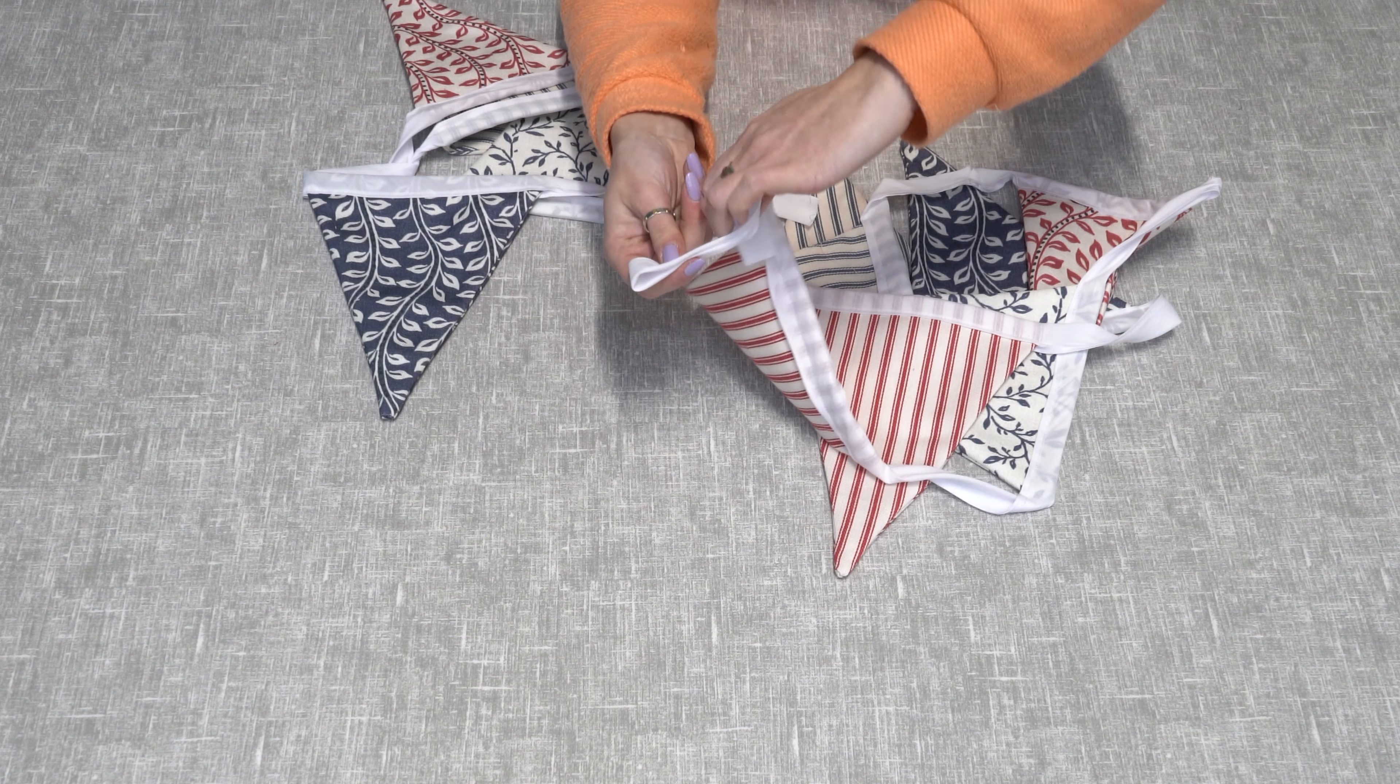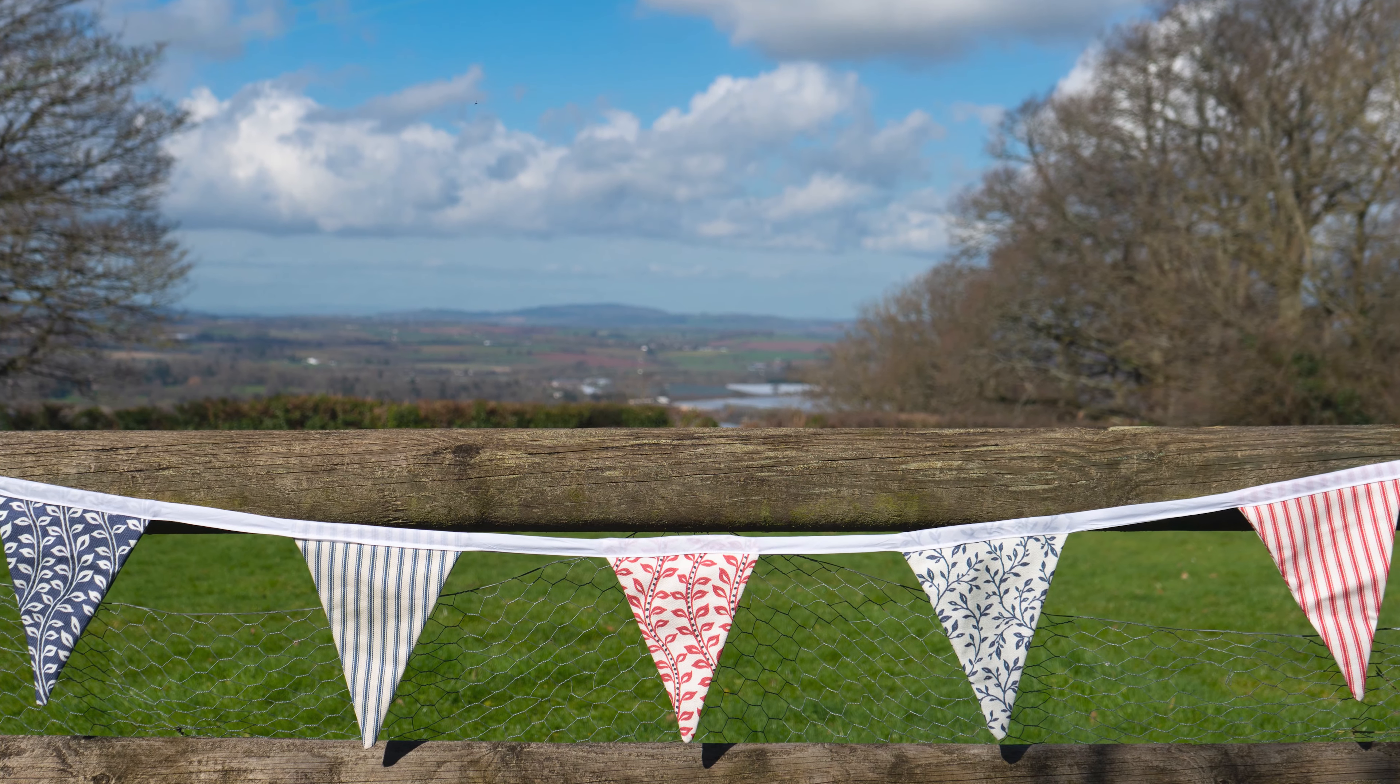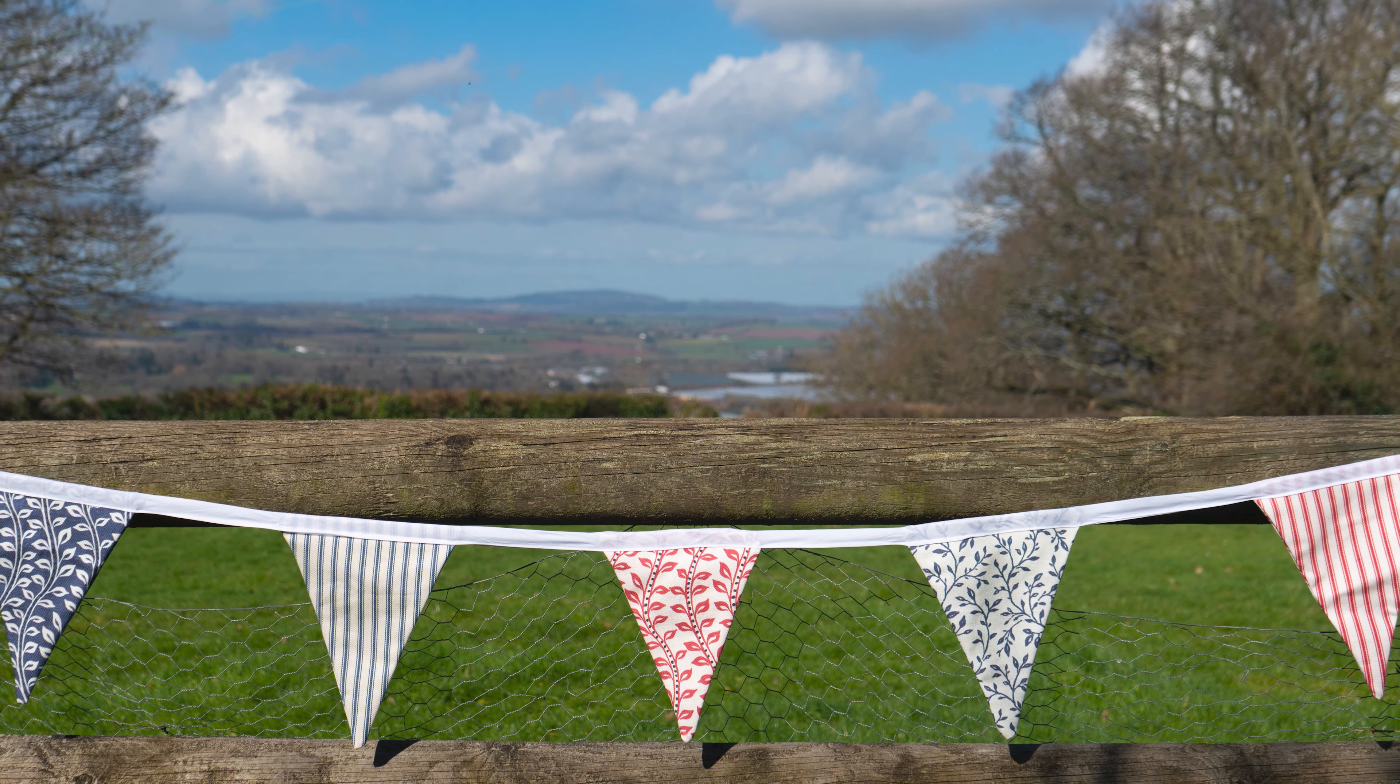So for each end, you can either stitch into a loop, you can leave it loose, or you can tie a knot, which is what I'm going to do on each end so that you've got some way to attach it. And once you've got your loops tied on the end, you've got your finished piece of bunting.